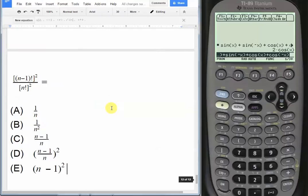Next question, here we have another simplification problem. n minus 1 factorial squared divided by n factorial squared simplifies to which one of these choices?